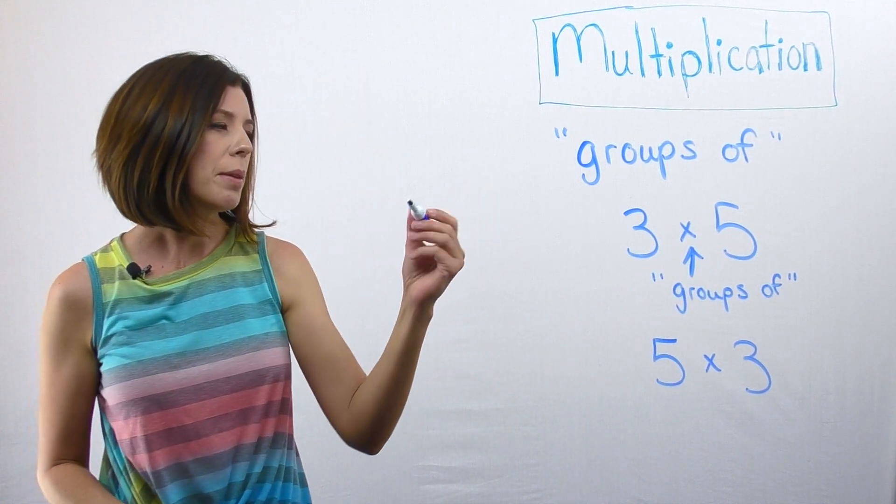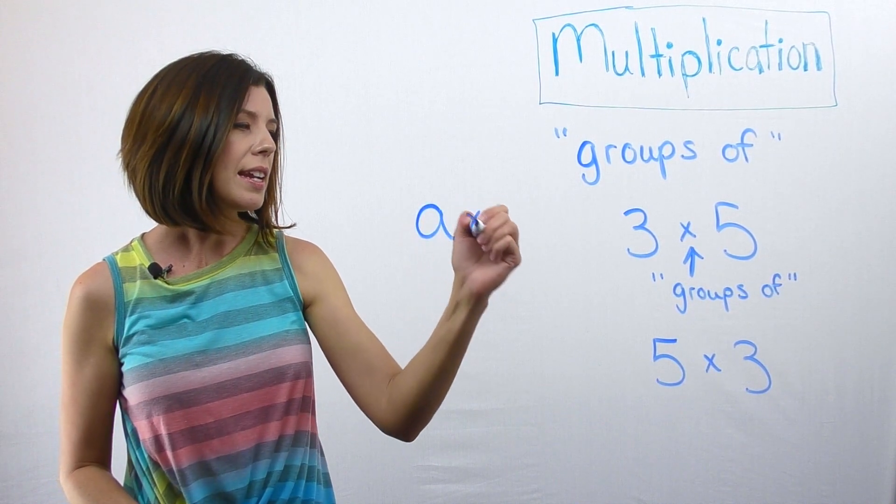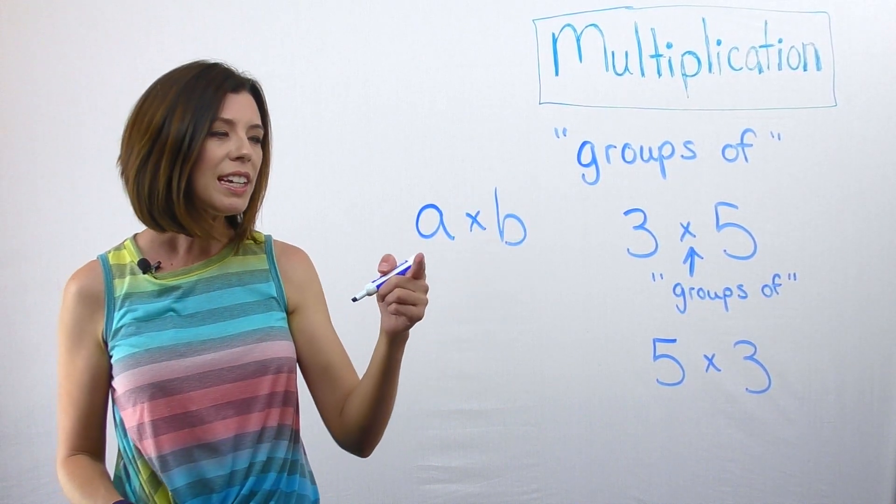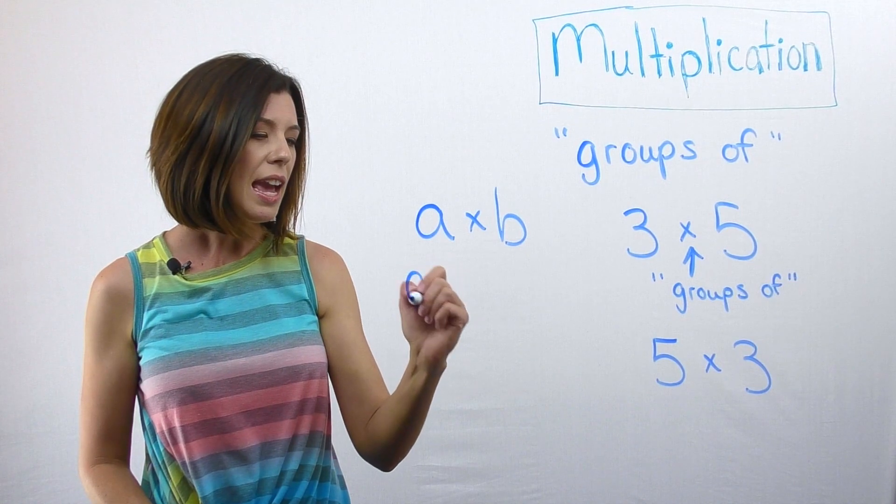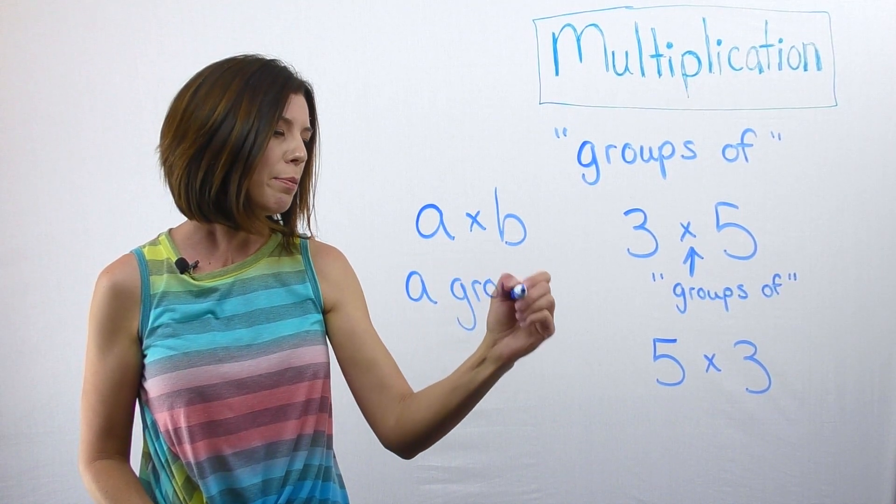Three is the number of groups, and five is how many are in each group. If we have something like A times B, we're thinking that there are A groups of B.